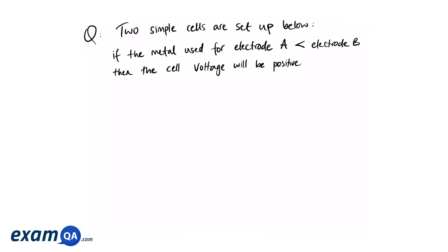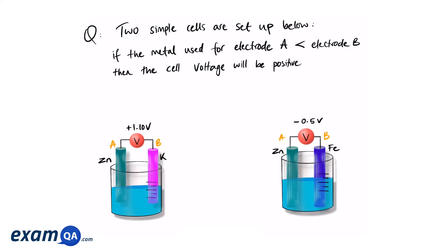Okay, so let's have a go at doing a question. Two simple cells are set up below. If the metal used for electrode A is less reactive than the metal used for electrode B, then the cell voltage will be positive. Calculate the voltage of a cell where electrode A is potassium and electrode B is iron.